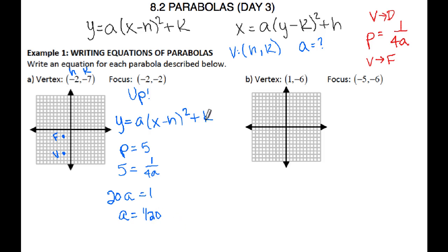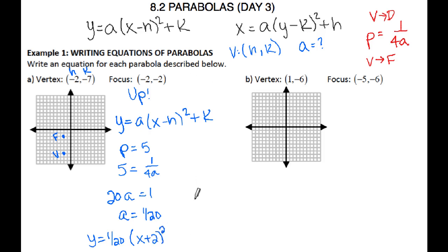I have a, h, and k, so I can write the equation. y equals 1/20 times (x minus negative 2) quantity squared plus negative 7. And there's the equation in standard form for a parabola with vertex negative 2, negative 7 and focus negative 2, negative 2.